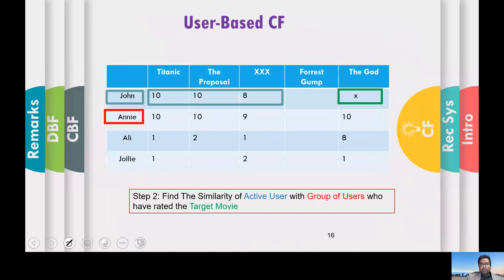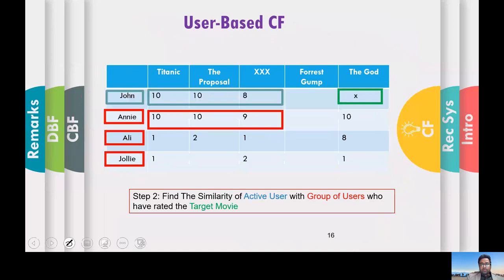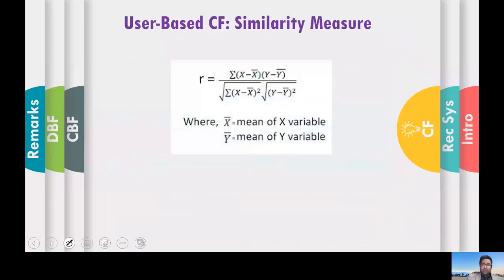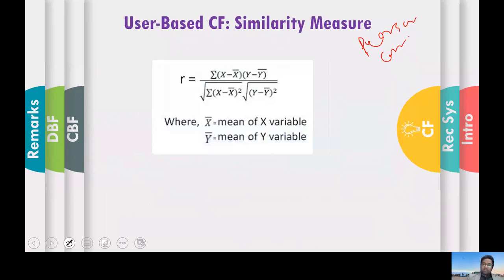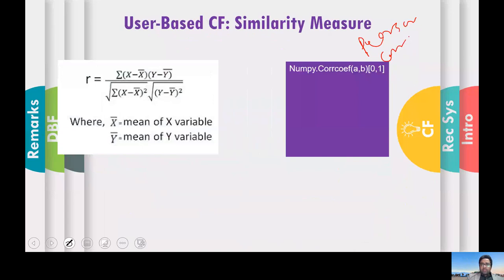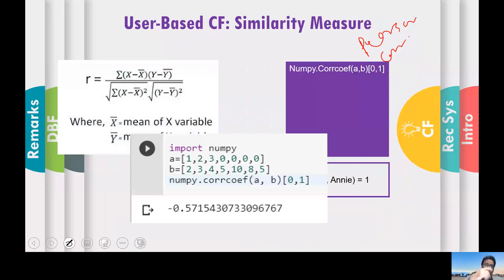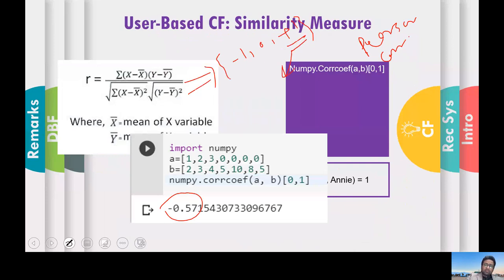You find similarity between John and Annie — which turns out to be 1 — between John and Ali — which turns out to be 0.5 — and between John and Julie — which turns out to be minus 0.8. In NumPy you can simply call corrcoef and it gives you the similarity. The output is between minus 1 and plus 1, where plus 1 means highly similar, 0 means not similar, and minus 1 means highly dissimilar.